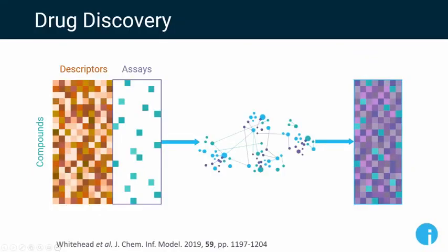In drug discovery, the sparse data we're interested in is effectively represented by a matrix of compound–assay pairs. We've got all the compounds and all the assays that have been run at a pharmaceutical company, but not all of those pairs have been run — not every assay has been run on every compound, and no compound will have been run in every assay.